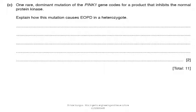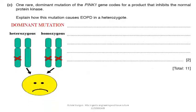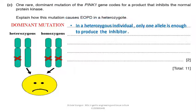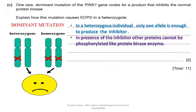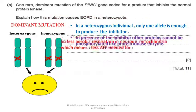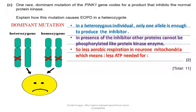Question C: One rare dominant mutation of the PINK1 gene codes for a product that inhibits the normal protein kinase. Explain how this mutation causes EOPD in a heterozygote. In a heterozygous individual, only one allele is enough to produce the inhibitor. In the presence of the inhibitor, other proteins cannot be phosphorylated by the protein kinase enzyme, so there is less aerobic respiration in neuron mitochondria. This means less ATP is available for dopamine production or recycling, sodium-potassium pumps, and establishing resting potential, leading to neuron death.